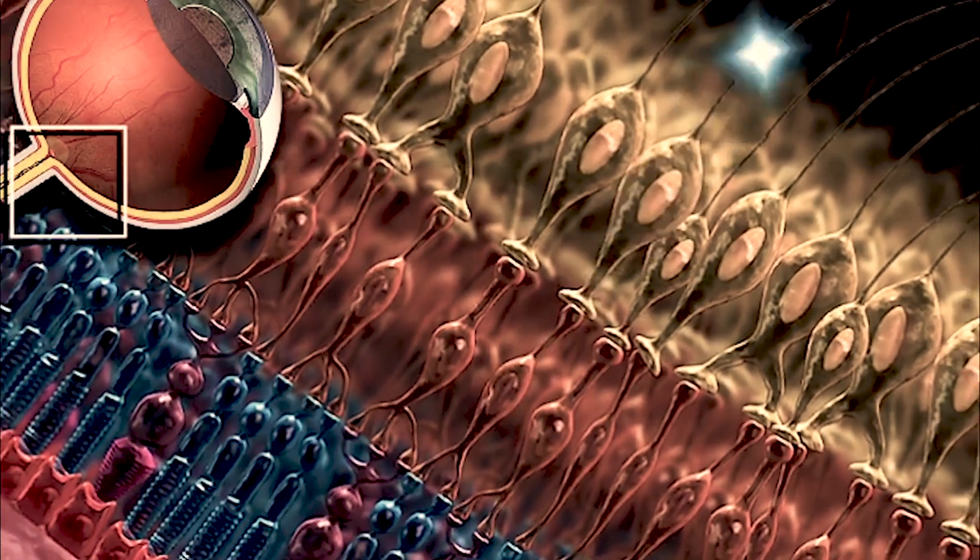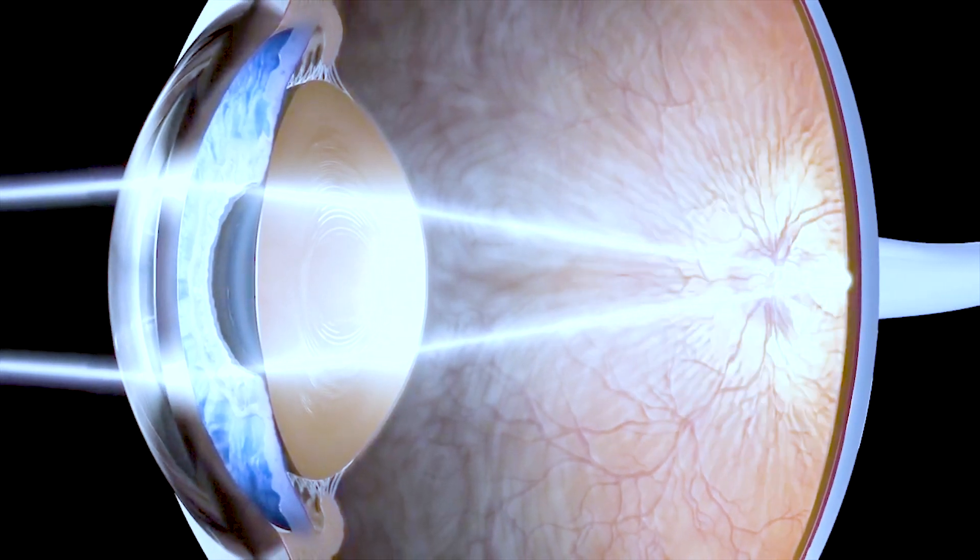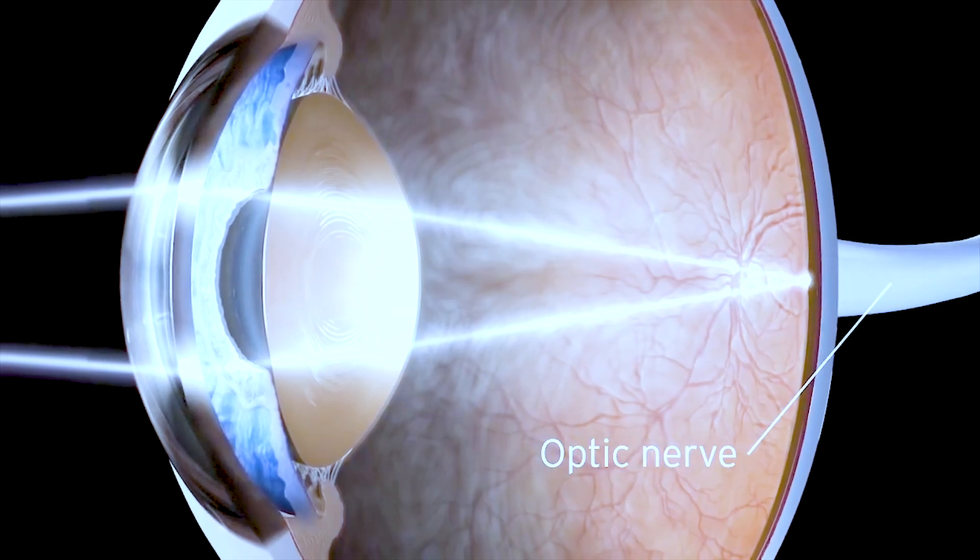Due to the high density of cone cells in the macula, we are able to see detailed visual images. The photoreceptors present in the retina convert images into electrical signals. These signals are sent to the brain through the optic nerve.